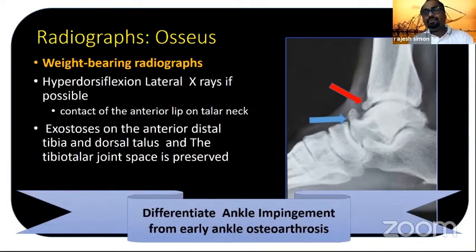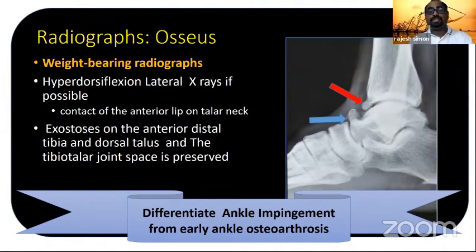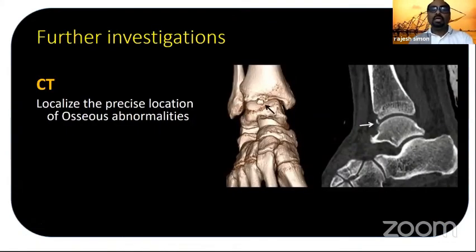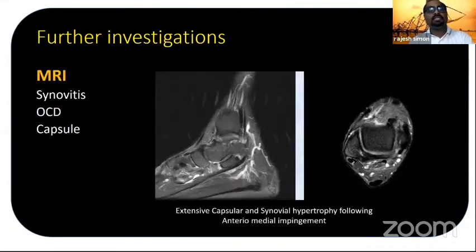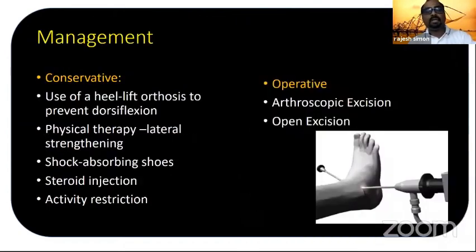You must differentiate between anterior ankle impingement and ankle osteoarthritis, because osteoarthritis also has osteophytes — simply removing the impingement will not solve osteoarthritis. CT helps precisely locate osseous abnormalities. MRI is helpful for soft tissue impingement: synovial thickening is better picked up on MRI, as are osteochondral defects.